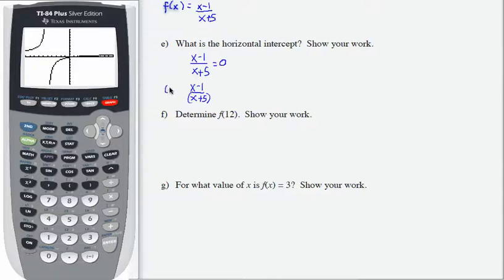If I multiply the left-hand side times x plus 5, then my numerator and denominator will cancel. If I multiply the right-hand side times x plus 5, well, 0 times x plus 5 is 0. So all I get is that x minus 1 equals 0. And if I solve for x, I get x equals 1.